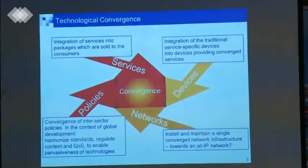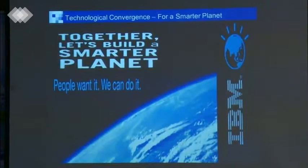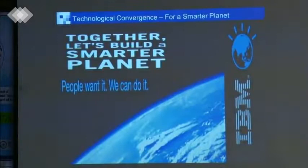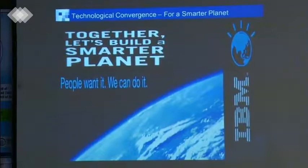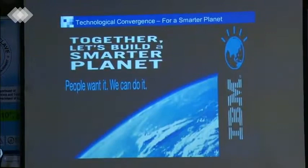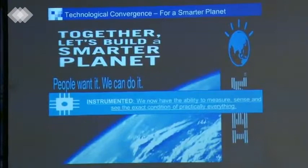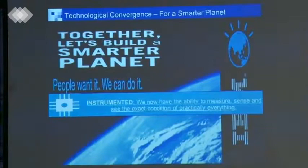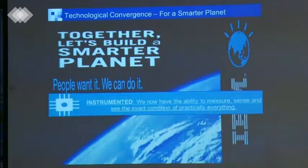You have a company like IBM. Ten years ago they were selling just machines and software. And suddenly they say: we care about making the planet smarter. Why is IBM interested in making the planet a smarter planet? They say we can do that because the planet is instrumented — it means we have sensors everywhere, you can measure, sense, and collect information everywhere.